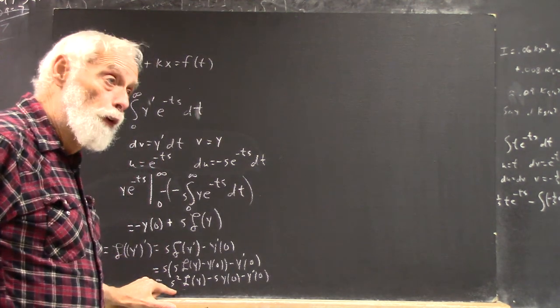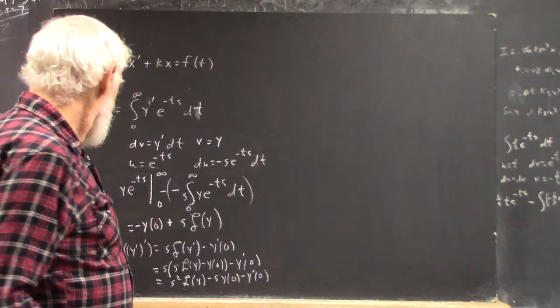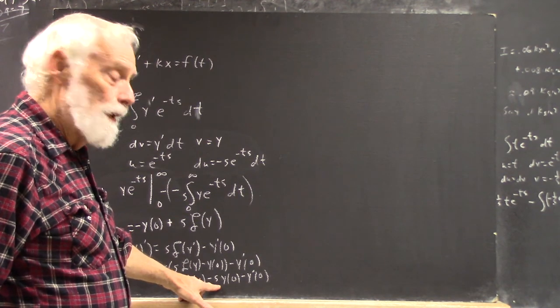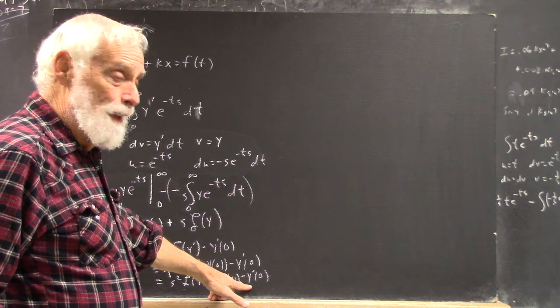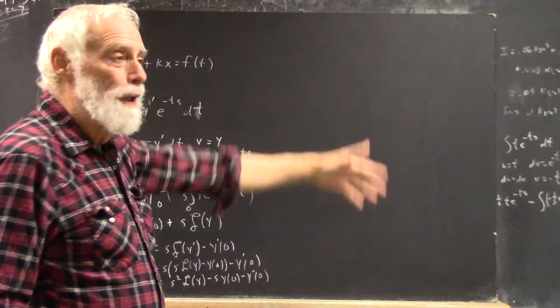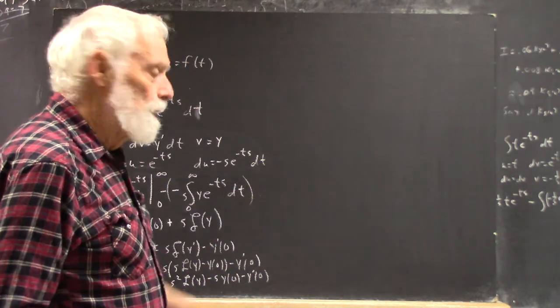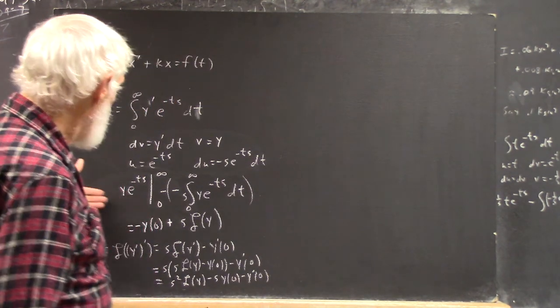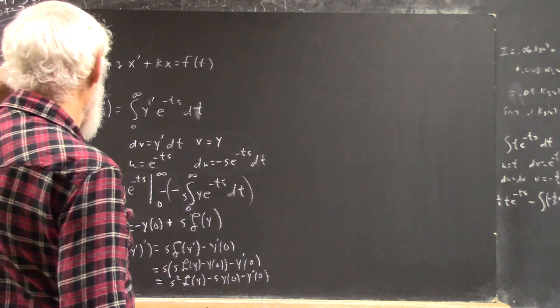And you can kind of look where it's going to be. You're going to get an s to the fourth of L of y, right? You're going to have two more iterations of this. You're going to get an s cubed on the y of zero, and an s squared on the y prime of zero. And then you're going to have a y double prime of zero with an s on it, right? And a y triple prime of zero, with an s on it. And a y triple prime of zero. If you do this, and I recommend that you do so you understand.